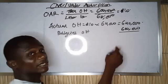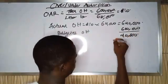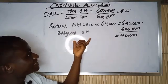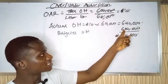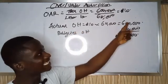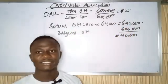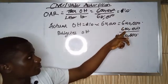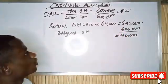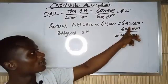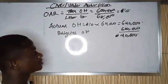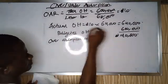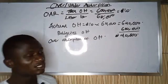The budgeted overhead from the question is $600,000. So subtracting: $640,000 minus $600,000 gives $40,000. The budgeted overhead that needed to be covered was $600,000, but I have actually covered $640,000 — more than required. This is over absorption of overhead, and the amount over absorbed is $40,000.